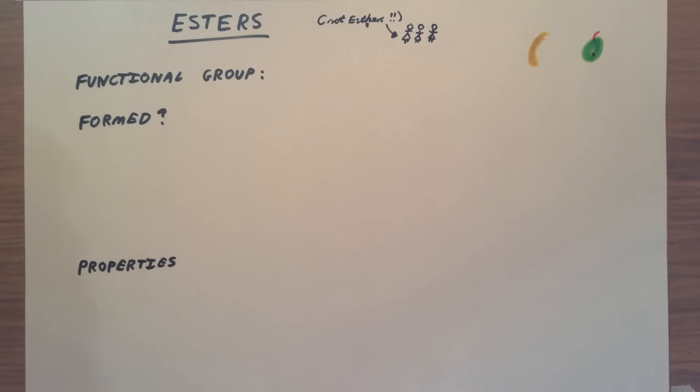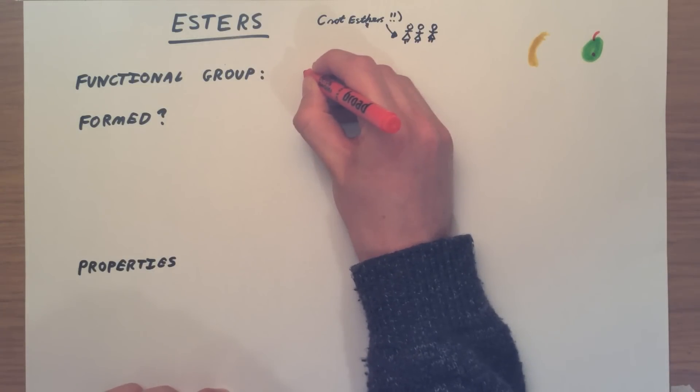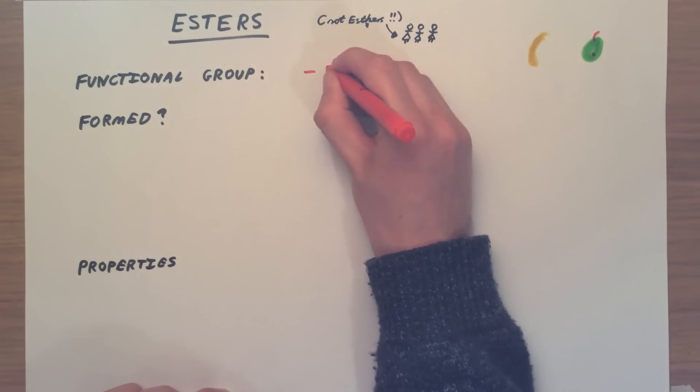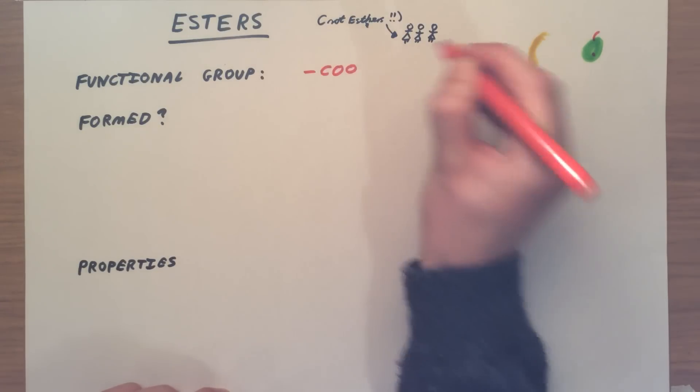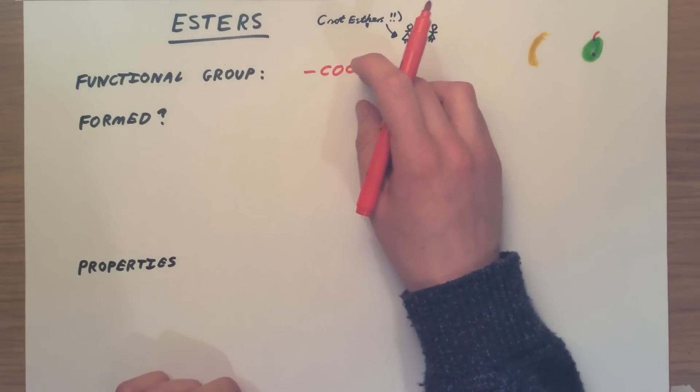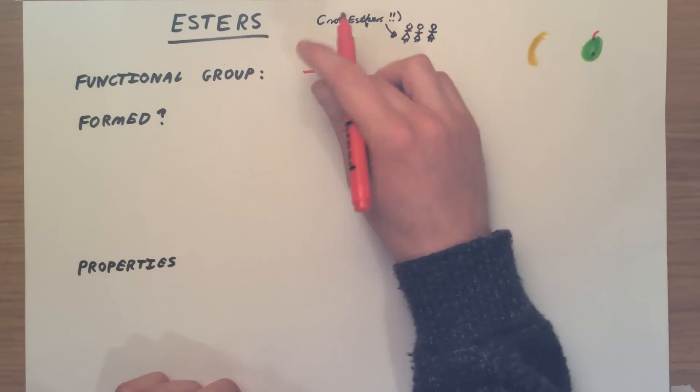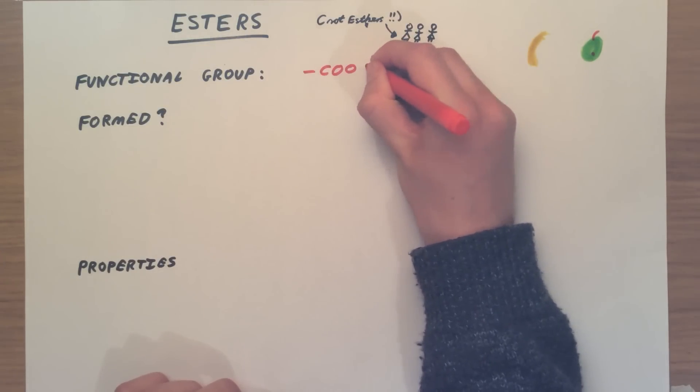So what is the functional group that is causing these properties? Well, they're actually based on carboxylic acid. If you imagine the carboxylic acid functional group, which was COOH, in an ester the OH has been replaced by an alcohol group. The functional group is actually COOC.